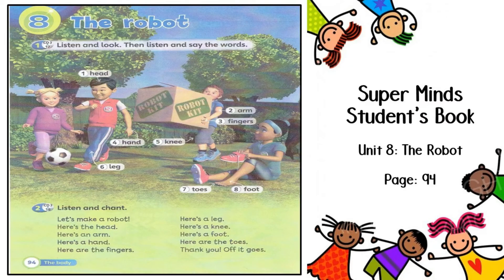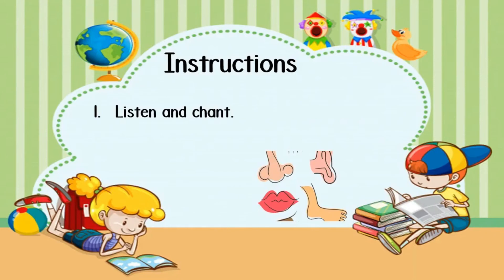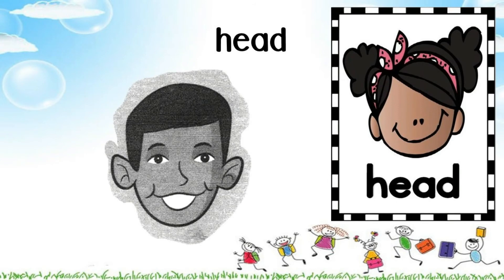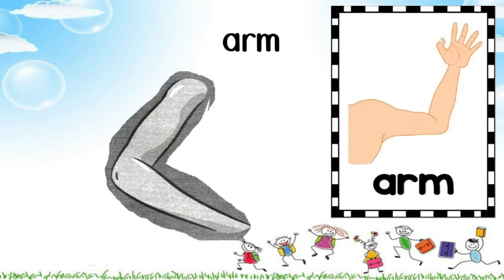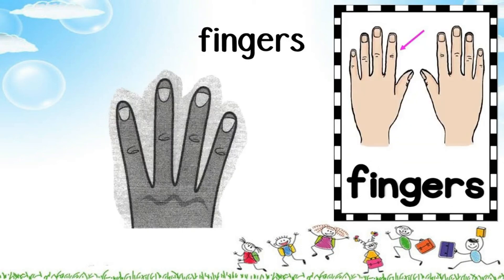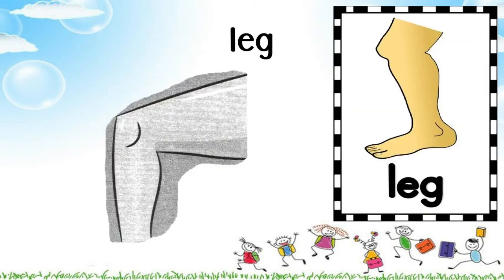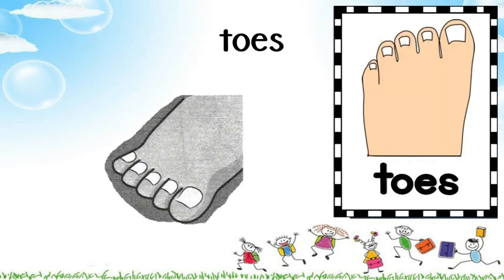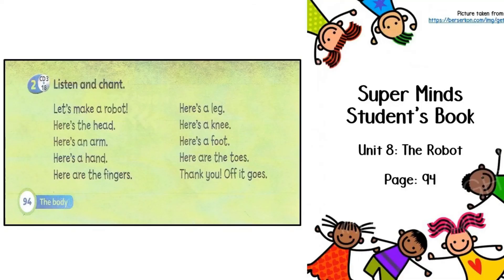Student's Book page 94, Activity 2: Listen and chant. Let's make a robot! Here's a robot. Here's the head. Here's an arm. Here's a hand. Here are the fingers. Here's a leg. Here's a knee. Here's a foot. Here are the toes. Thank you, off it goes! Let's make a robot!